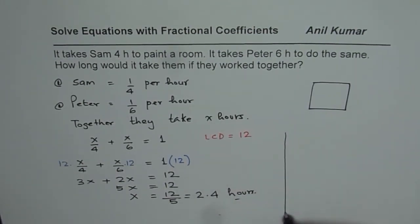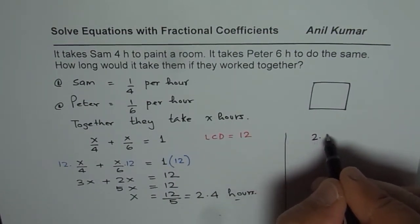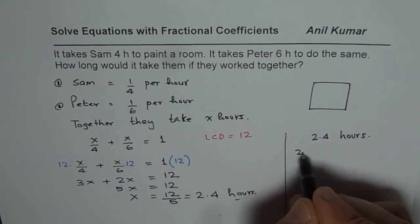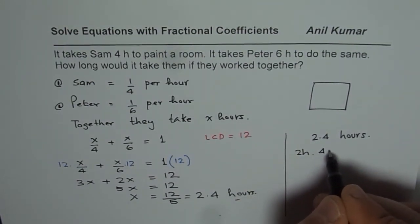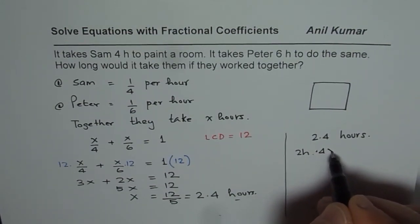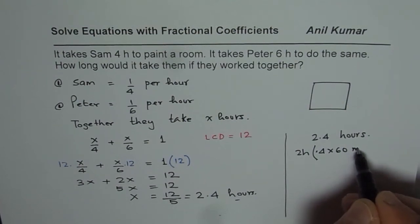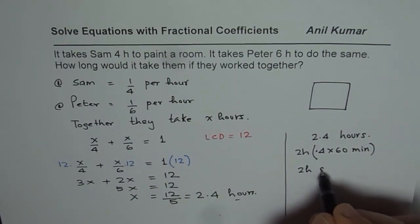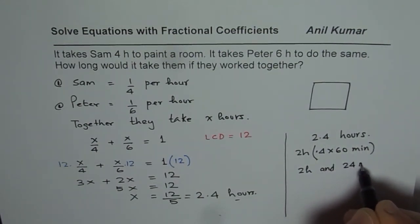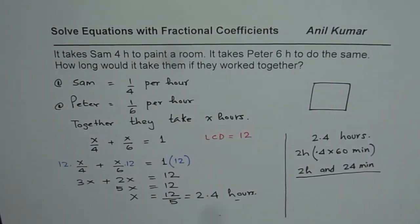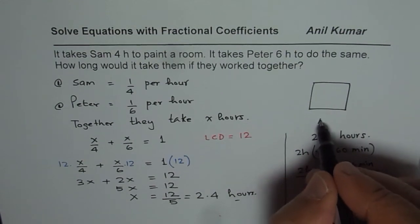You could also write the answer in hours and minutes. We are saying two point four hours. That means two hours and point four times sixty minutes. Six times four is twenty-four. So it takes two hours and twenty-four minutes to complete the job if both of them work together.